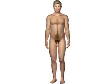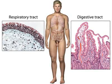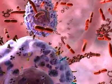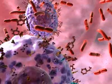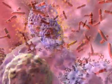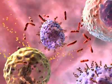Mast cells are widely distributed in human tissues. Large numbers are found at points of contact between the body and the outside world, such as the skin and the mucous membranes of the respiratory and gastrointestinal tracts. Mast cells express toll-like receptors that recognize common bacterial antigens and initiate the release of cytokines that quickly recruit neutrophils and other immune cells to the sites of bacterial invasion.